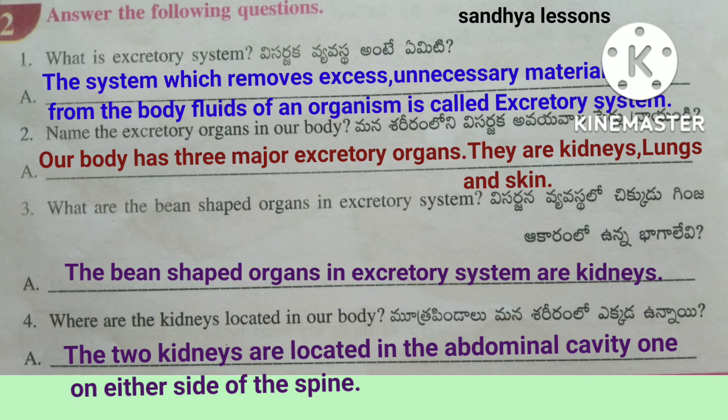Third question: What are the bean-shaped organs in the excretory system? The bean-shaped organs in the excretory system are the kidneys. Fourth question: Where are the kidneys located in our body? The two kidneys are located in the abdominal cavity, one on either side of the spine.